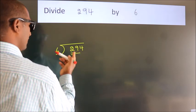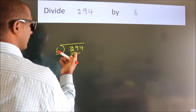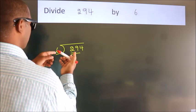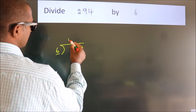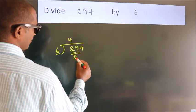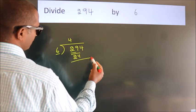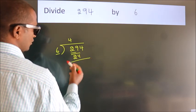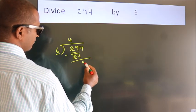29. A number close to 29 in the 6 table is 6 times 4, which is 24. Now, we should subtract. We get 5.